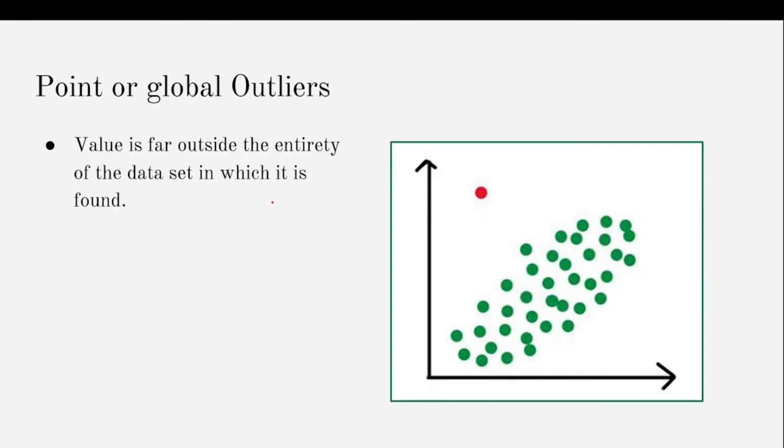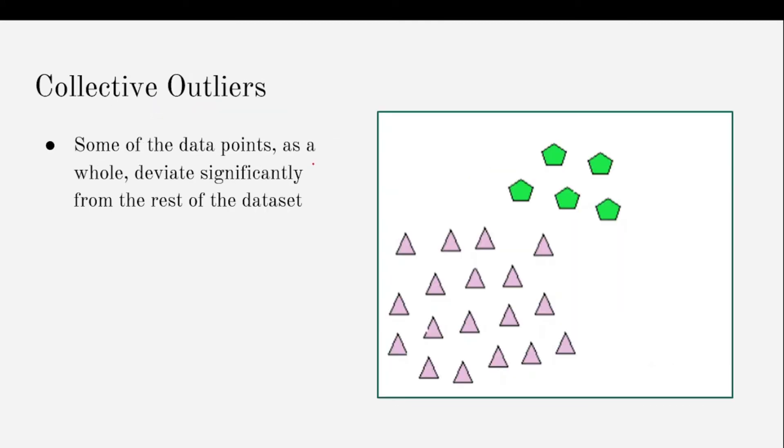Now let us see what are the different types of outliers. The first type of outlier is point or global outliers. As we can clearly see from the name, global outliers are the outliers whose value is far outside the entirety of the data set in which it is found. As we can see in this scatter plot, all the points are clustered in a single region, but there is a single point which is outside this region, and hence this will become the global outlier.